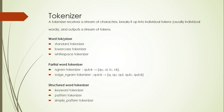Partial word tokenizer means it takes a word and breaks it into letters, tokenizing the words into individual letters. In the structured word tokenizer, it will tokenize the sentence by breaking it up into patterns or keywords. Keywords here means it could be a complete sentence or a word — it depends on the body of your content.